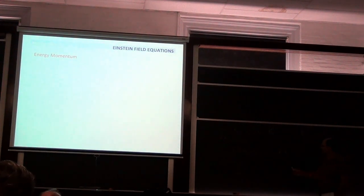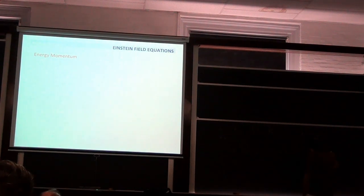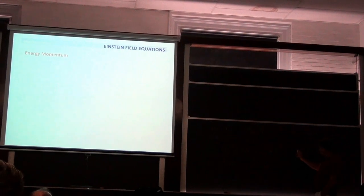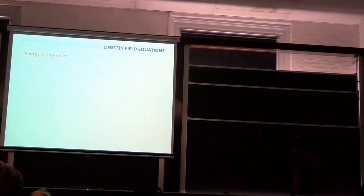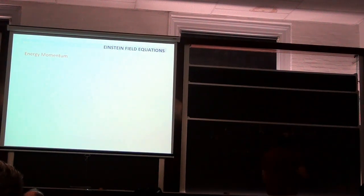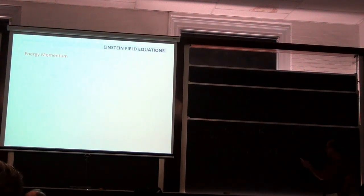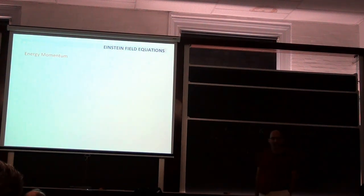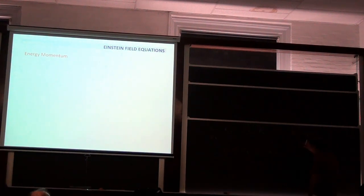The Euler-Lagrange equation for this phi is just the wave operator acting on phi equals zero. This is the Laplace-Beltrami operator on the manifold written with Lorentzian signature. The square operator is defined exactly the same way as the Laplace-Beltrami operator, but now because of the signature it's a wave equation, not an elliptic equation — and their properties cannot be more different.